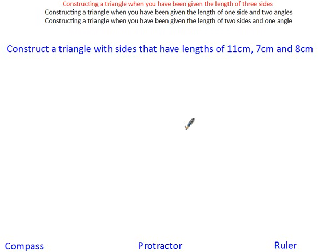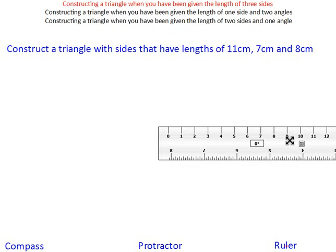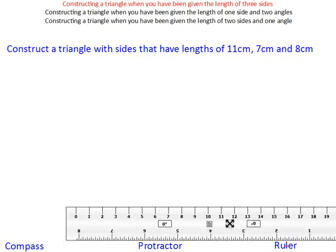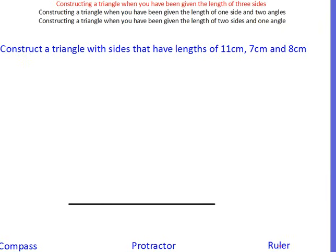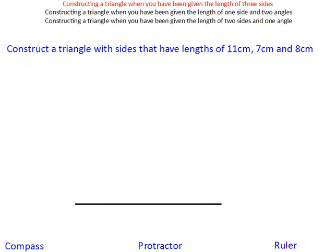The first triangle we're going to construct is one where you've been given the length of three sides: 11 centimeters, 7 centimeters, and 8 centimeters. The first thing we need to do is get our ruler. I always pick the longest length, so I pick 11 centimeters as the base. With your pencil, draw 11 centimeters. Once you've measured that, label it 11 centimeters.